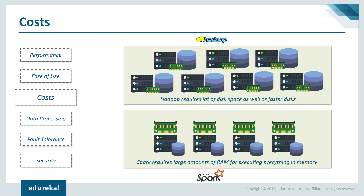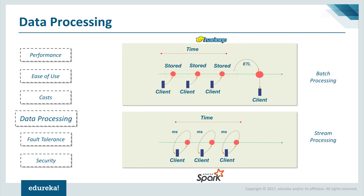Since disk space is relatively inexpensive, and Spark does not use disk I/O for processing, it instead requires large amounts of RAM for executing everything in memory — so Spark systems incur more cost. However, Spark's technology reduces the number of required systems; it needs significantly fewer systems that cost more. There will be a point at which Spark reduces the cost per unit of computation even with the additional RAM requirement.